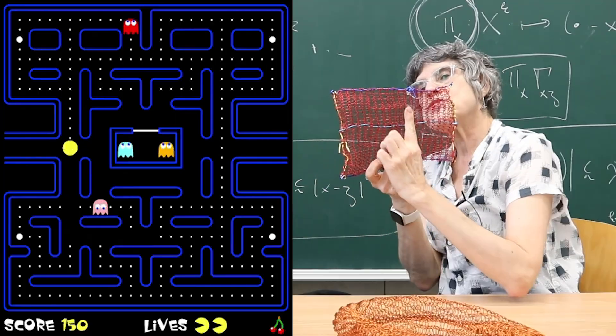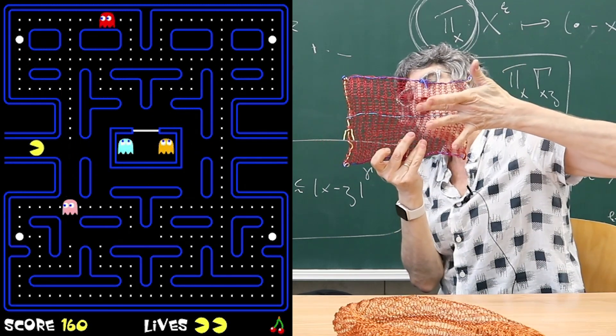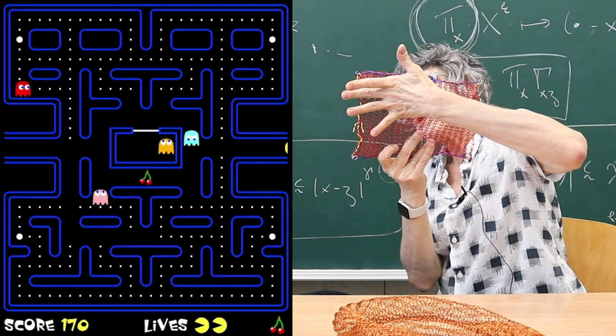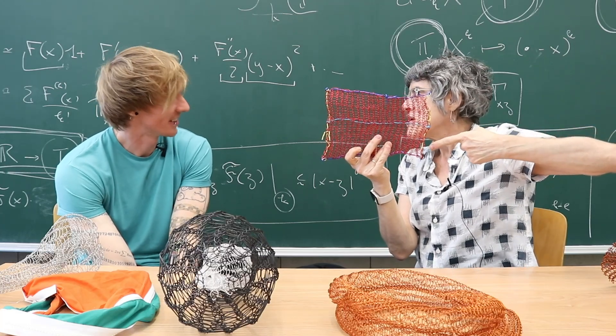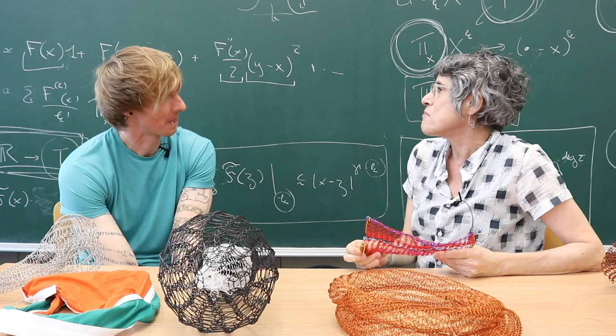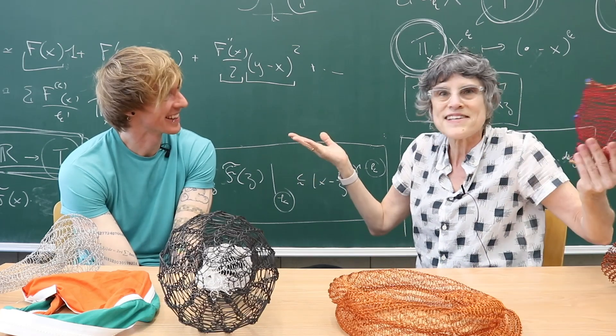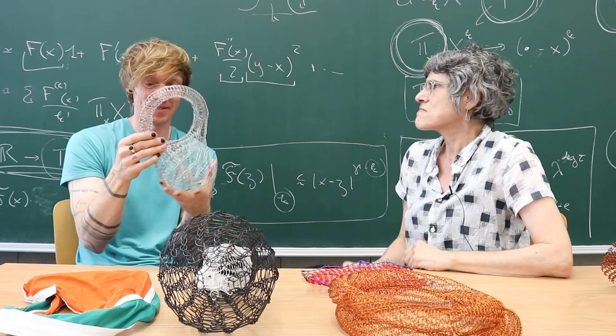So, you know, in the Pac-Man, the creature lives from here and comes out here. Well, now imagine that every time it comes out here, it comes out flipped and in this side. Yes. So here it is. So that explains, I think, what's happening.